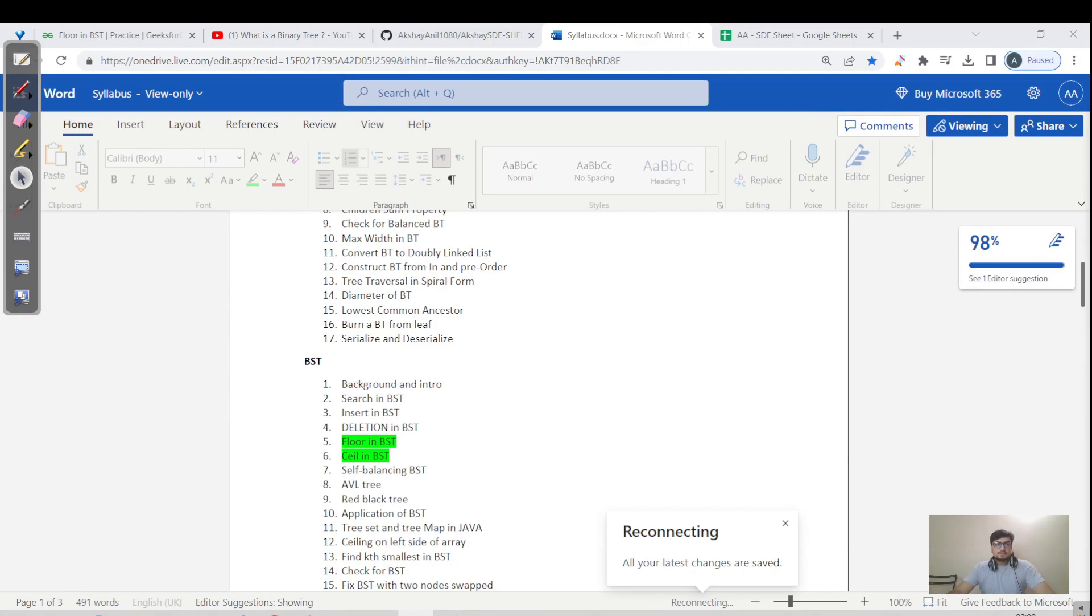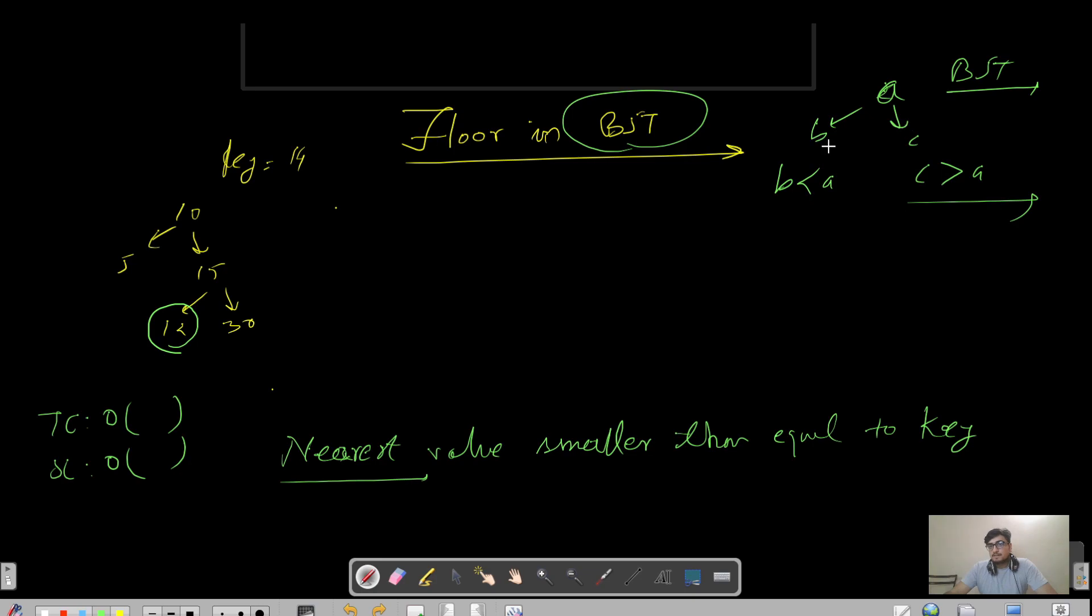Hello everyone, this is Akshay here and today we are going to watch the floor in the BST. We already know what BST is all about. BST is nothing but that we have a root node, left child and right child. The left child is always smaller than the root node and the right child is always greater than the root node.